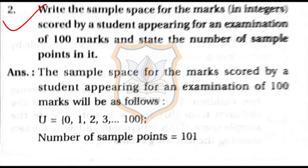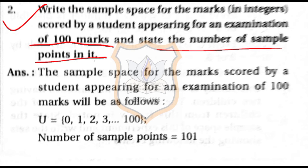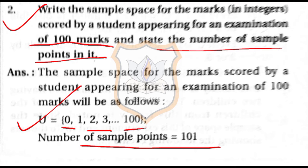Question 2: Write the sample space for the marks in integers scored by a student in an examination of 100 marks, and state the number of sample points. The student can get 0, 1, 2, 3, and so on up to 100. The numbers 1 to 100 give 100 values, plus 0, so the total number of sample points is 101.